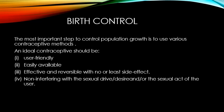To control population growth, the most important step is to use various contraceptive methods, also known as birth control methods. An ideal contraceptive should be user-friendly, easily available, effective and reversible, with no or least side effects, and should not interfere with the sexual drive, desire, or the sexual act of the user.